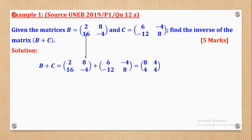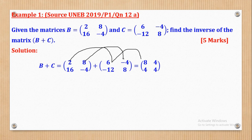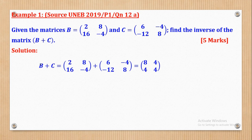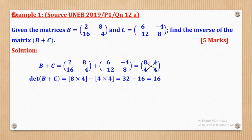Substituting and adding: 2 plus 6 gives 8; 8 plus negative 4 gives positive 4; 16 plus negative 12 gives 8; negative 4 plus 8 gives positive 4. So matrix B plus C is [8, 4, 8, 4]. Now we get its determinant: 8 times 4 is 32, minus 4 times 4 which is 16, giving us 16. That is the determinant of matrix B plus C.